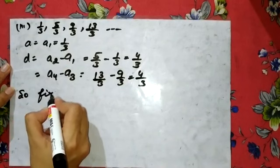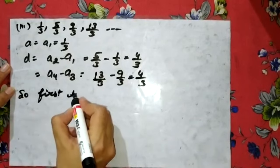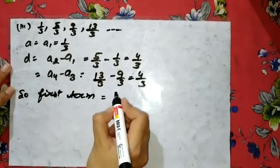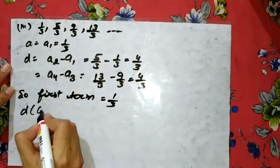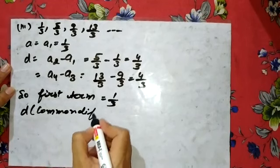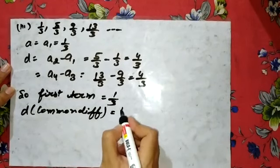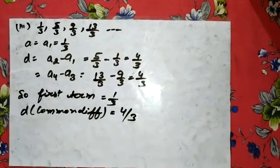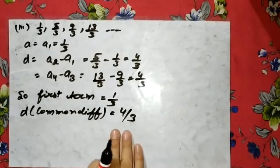So you have to write here, therefore first term is 1 by 3, and D, that is your common difference, is 4 by 3. So in this way you solve these questions. The remaining part you have to do yourself.